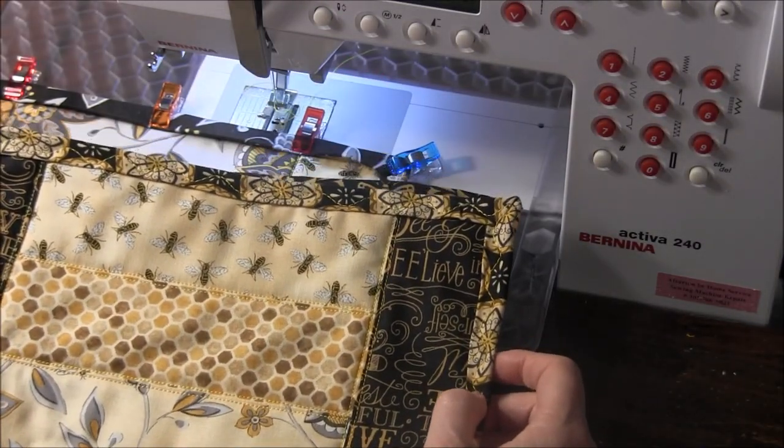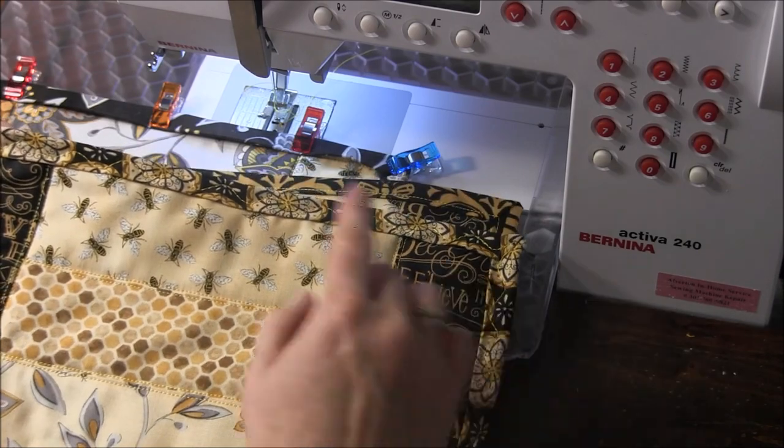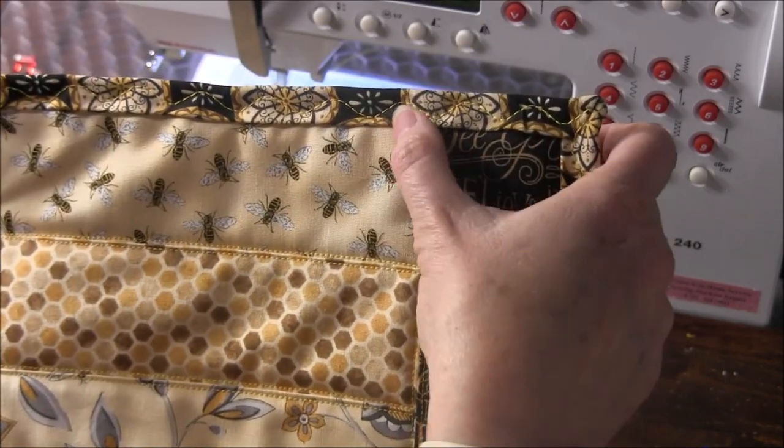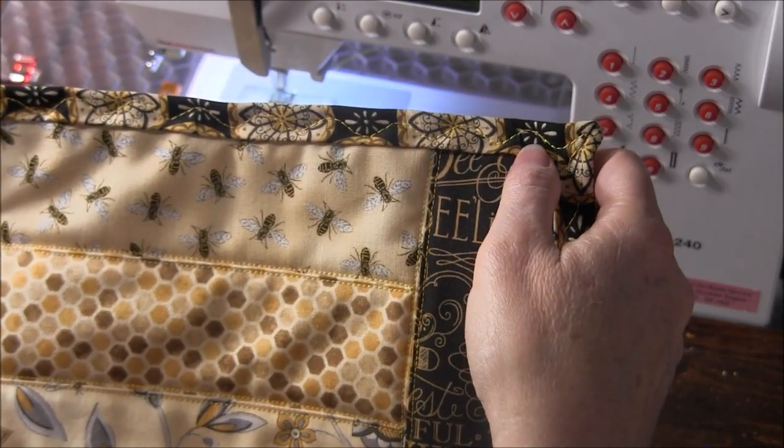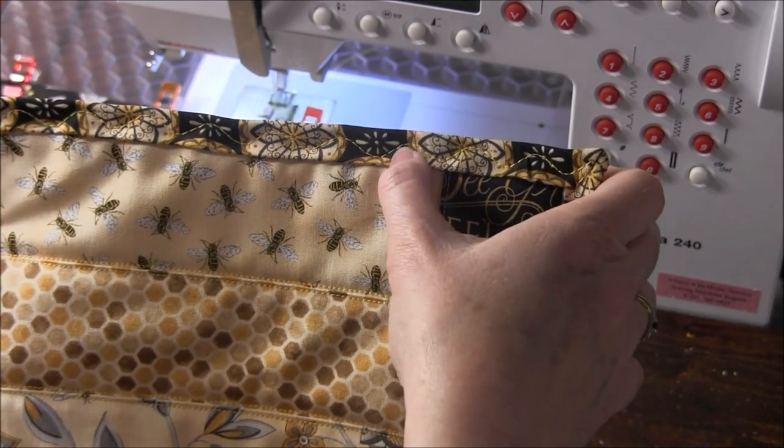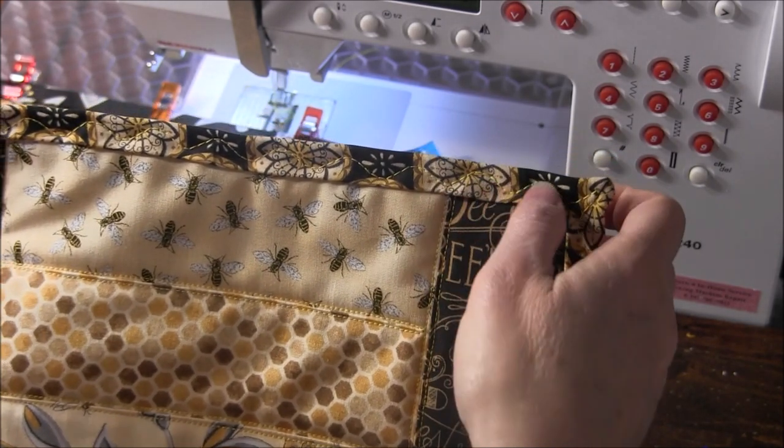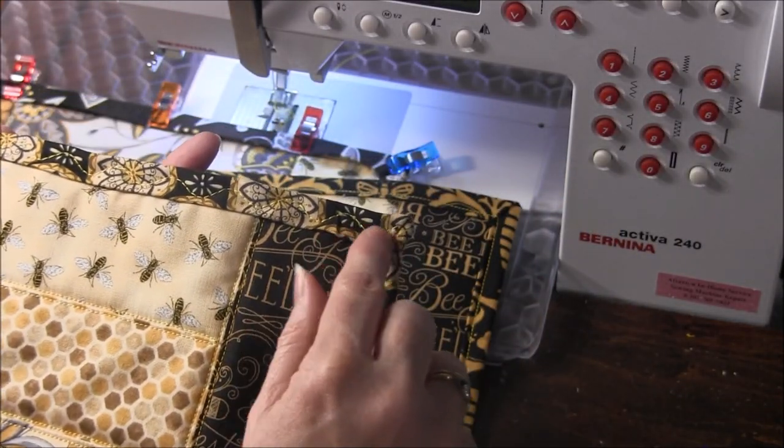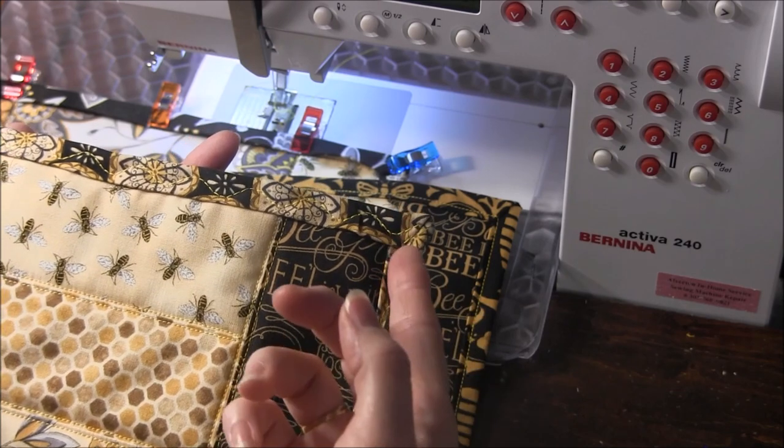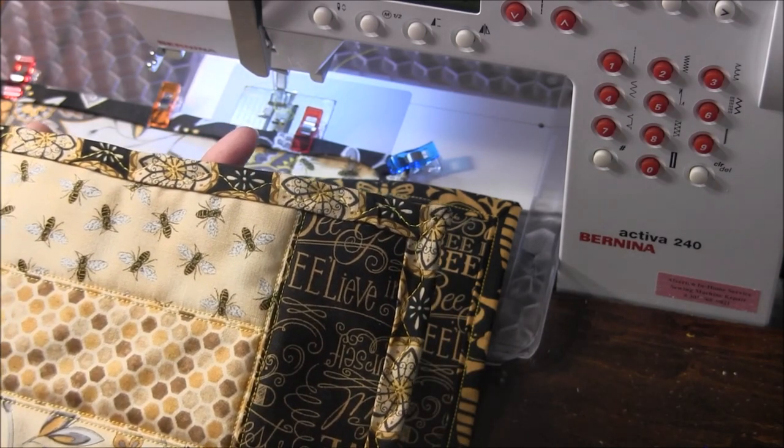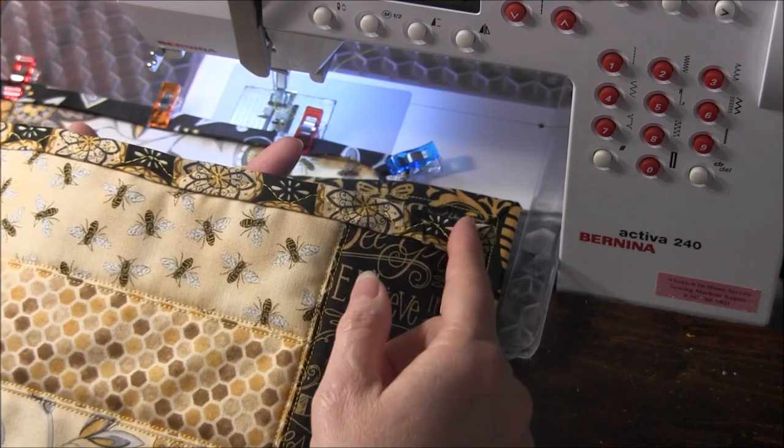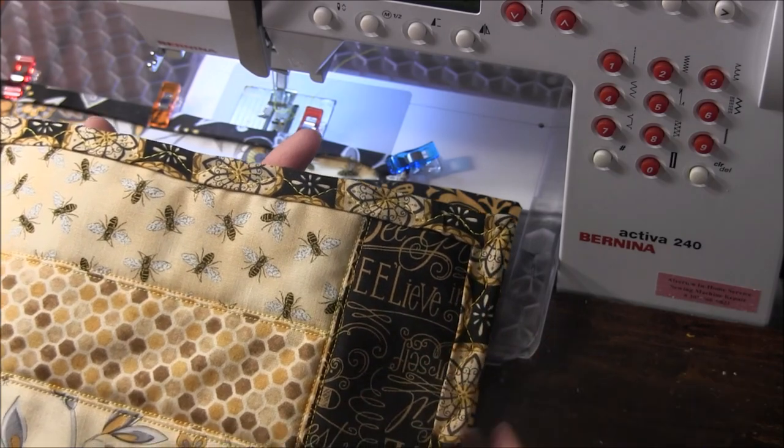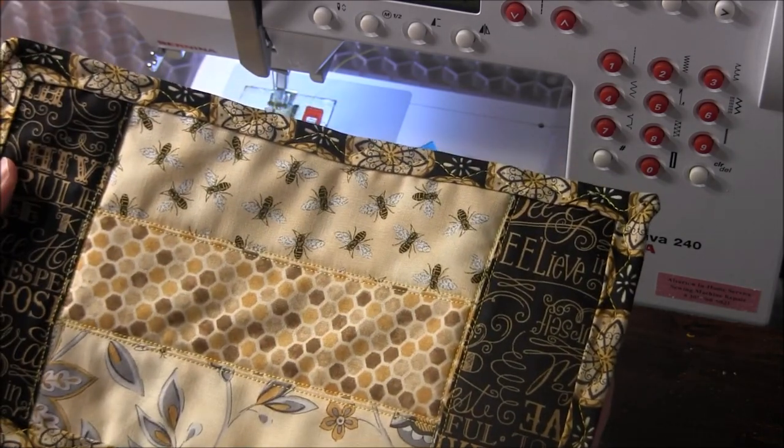So now you have a few choices on how to stitch down your binding. For this one, I used the serpentine stitch, which is one of the special stitches on my sewing machine. And I lengthened the stitch length so that it would meander back and forth across. When you get to the corner with the serpentine stitch, you just go into the corner, do your pivot 90 degrees, and then just continue. And it'll do some sort of little loop or crossover itself, but don't worry about that. It looks good no matter what happens.